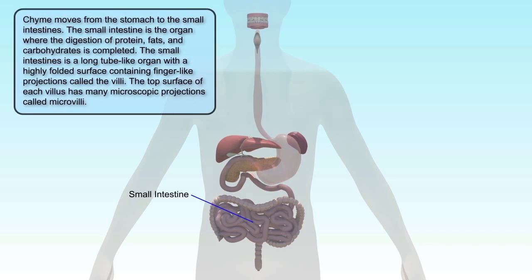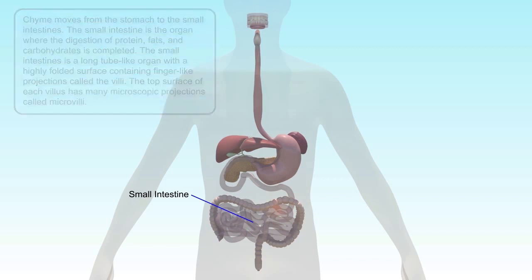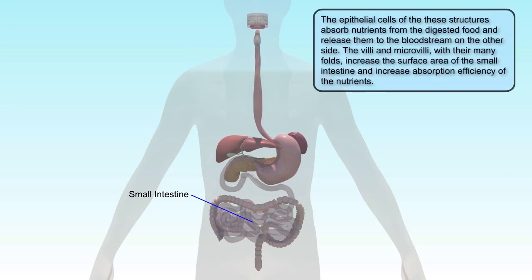Chyme moves from the stomach to the small intestine, the organ where the digestion of protein, fats, and carbohydrates is completed. The small intestine is a long, tube-like organ with a highly folded surface containing finger-like structures called villi. The epithelial cells of these structures absorb nutrients from the digested food and release them to the bloodstream on the other side.